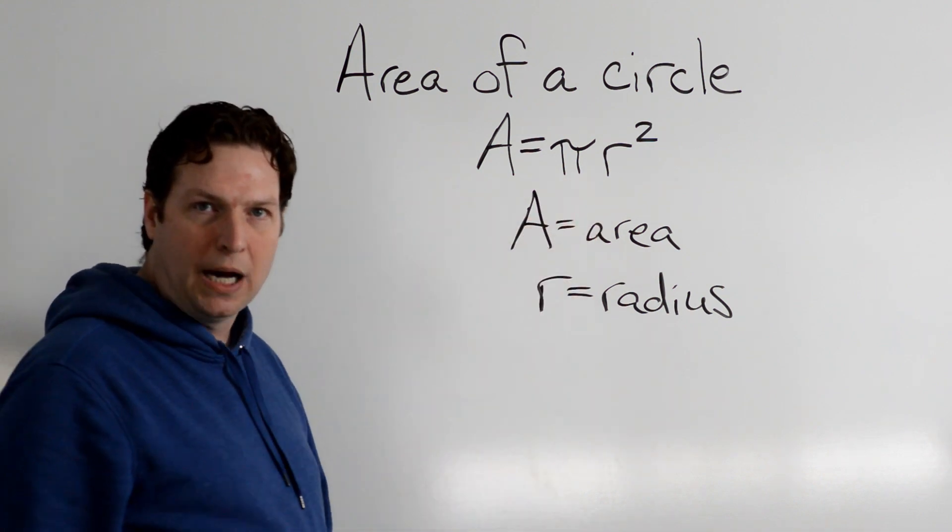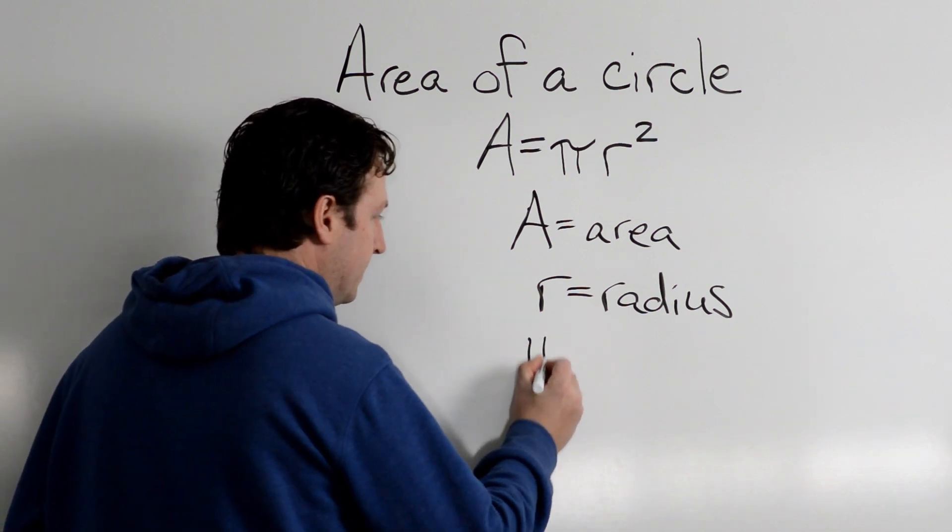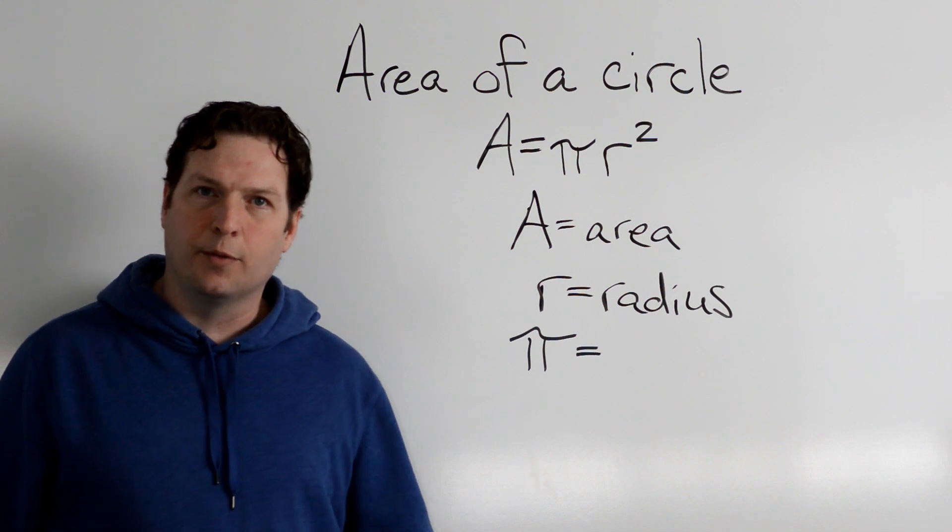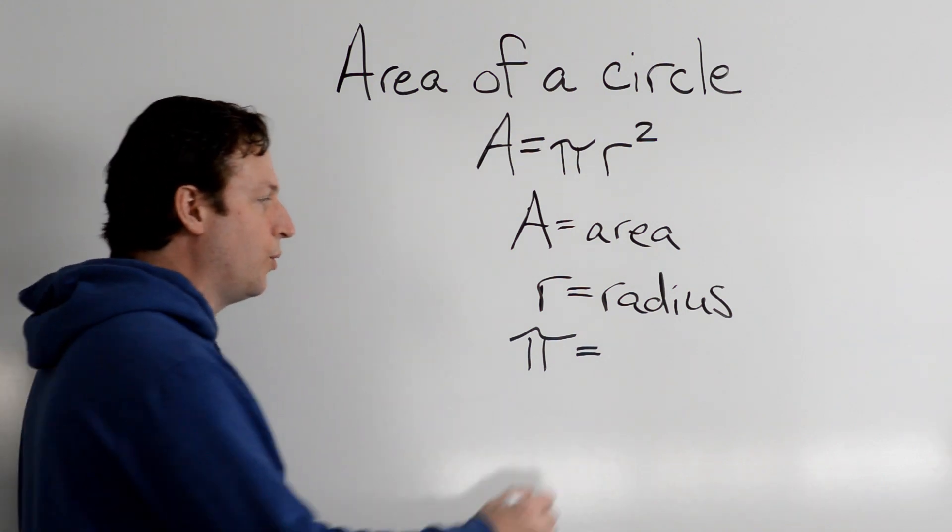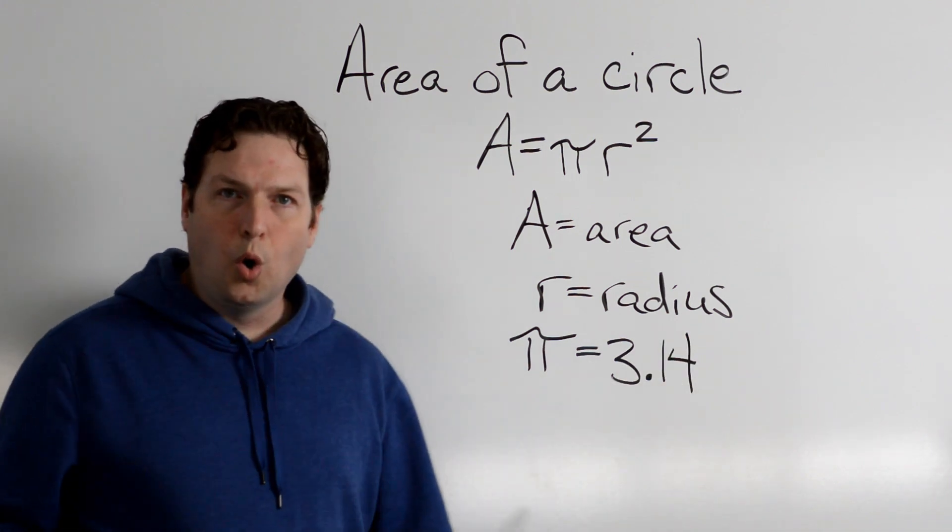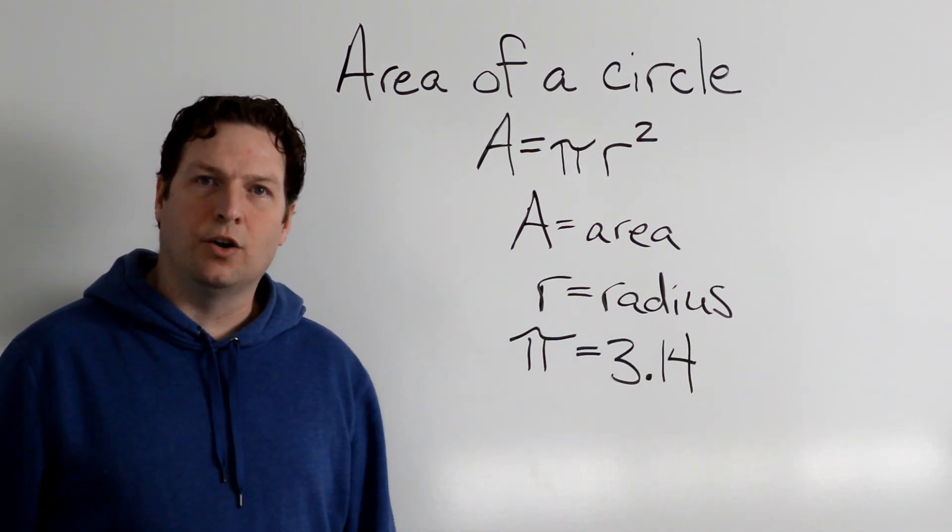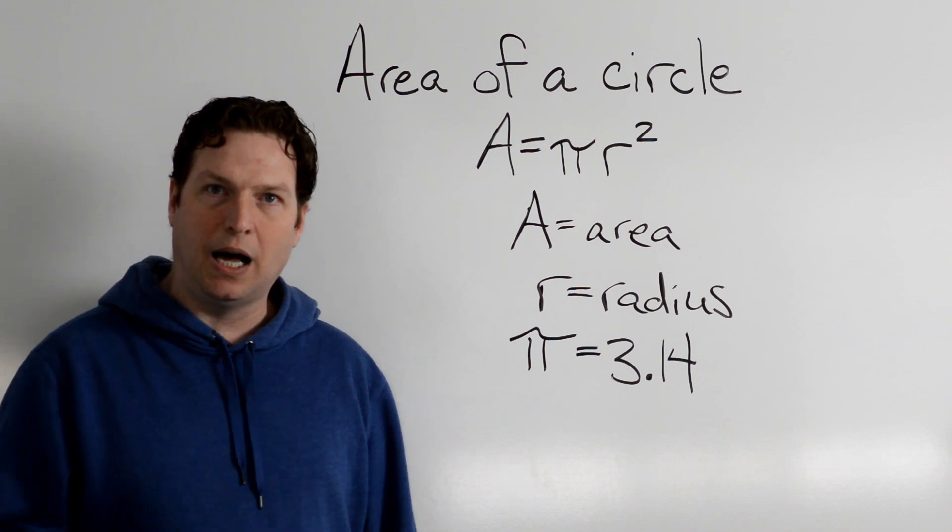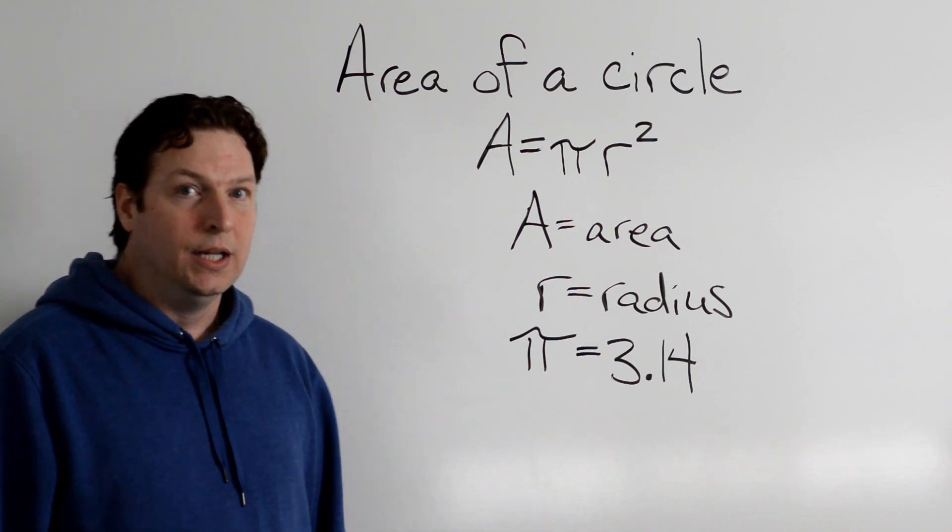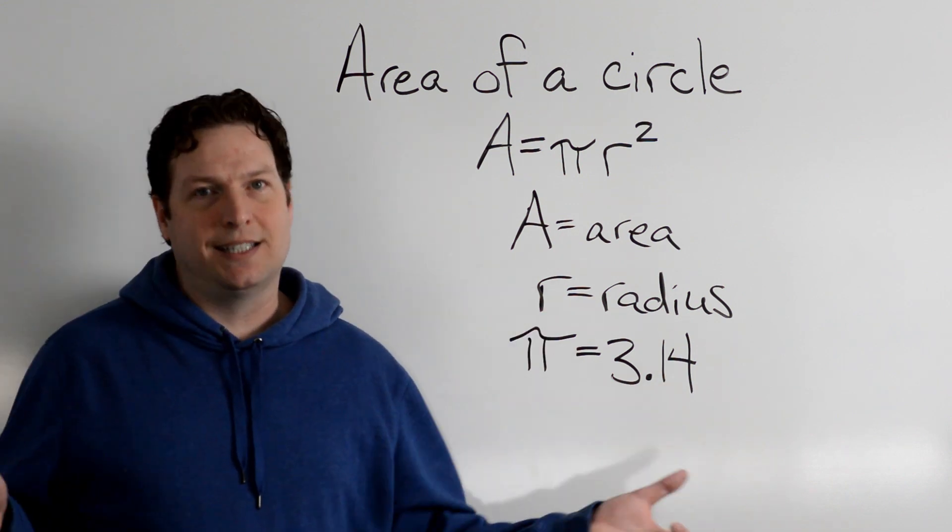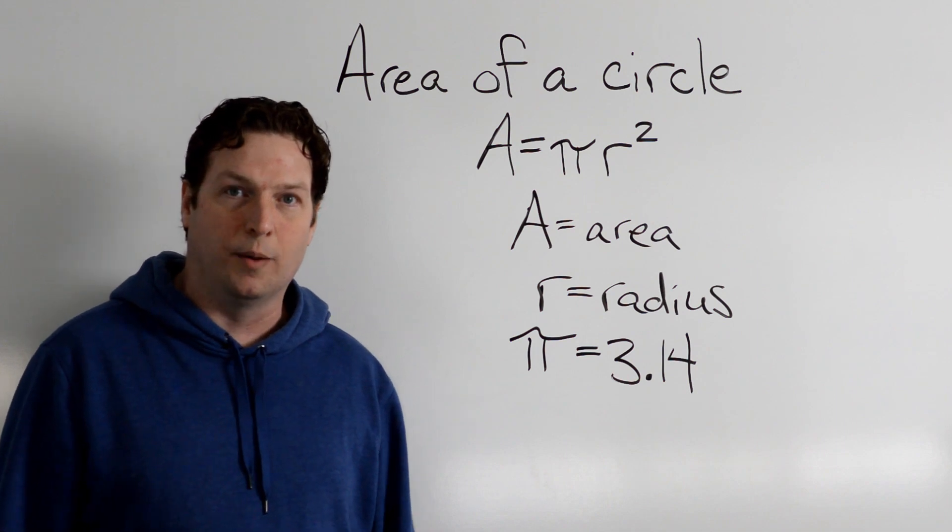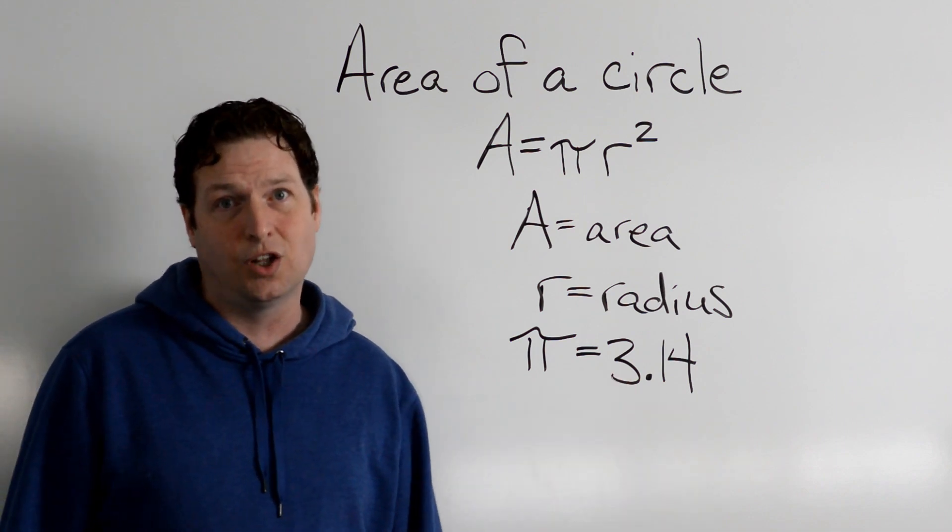And this funny little guy right here is known as pi. A lot of times for pi we will use the numbers 3.14, or you might even have a button on your calculator that is pi, because it's actually a much longer number. That's going to be in a separate video. For this one we'll use 3.14, but I do want you to know that it's a much longer number.